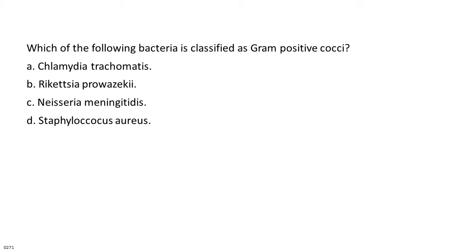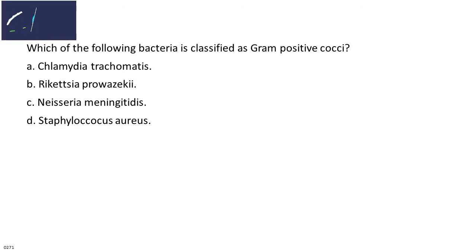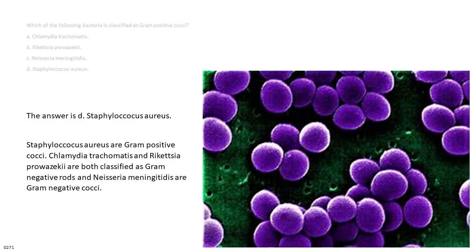Which of the following bacteria is classified as gram-positive cocci? A. Chlamydia trachomatis. B. Rickettsia prowazekii. C. Neisseria meningitidis. D. Staphylococcus aureus. The answer is D. Staphylococcus aureus. Staphylococcus aureus are gram-positive cocci. Chlamydia trachomatis and Rickettsia prowazekii are both classified as gram-negative rods, and Neisseria meningitidis are gram-negative cocci.